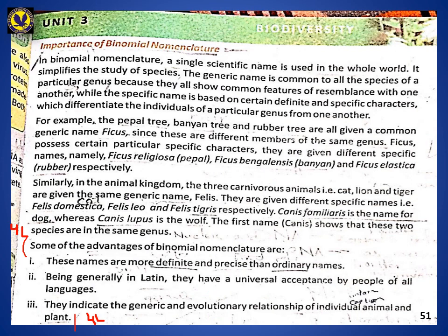The next section is the importance of Binomial Nomenclature. In binomial nomenclature, a single scientific name — the specific name — is used throughout the whole world. It simplifies the study of species. The generic name is common to all the species of a particular genus because they all show common features of resemblance with one another, while the specific name is based on certain definite and specific characters which differentiate individuals of a particular genus from one another.